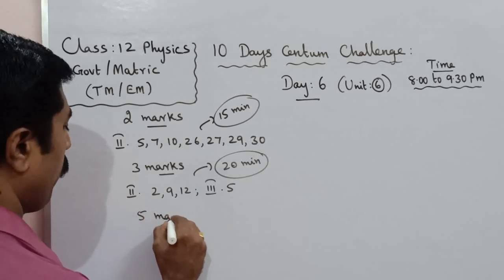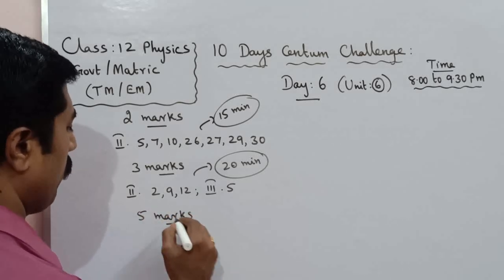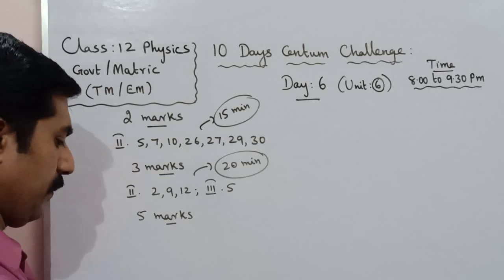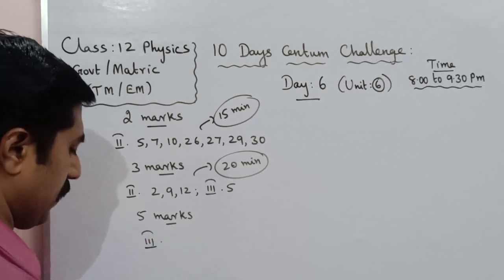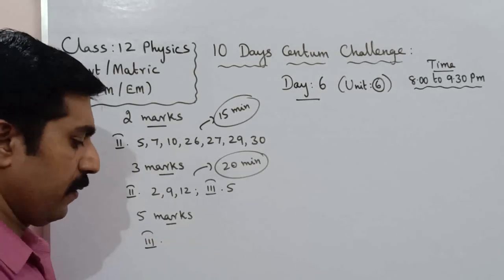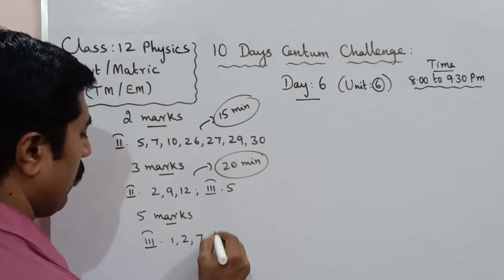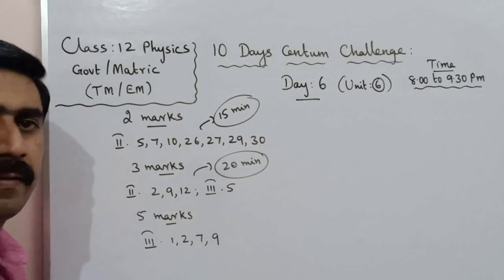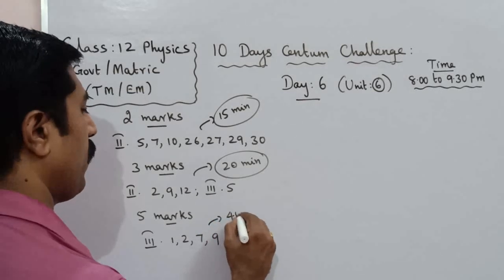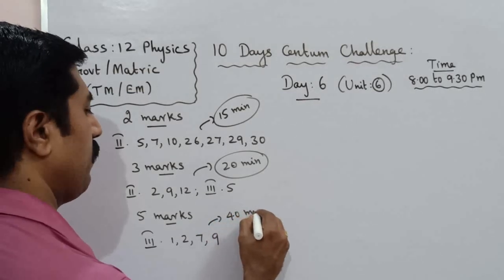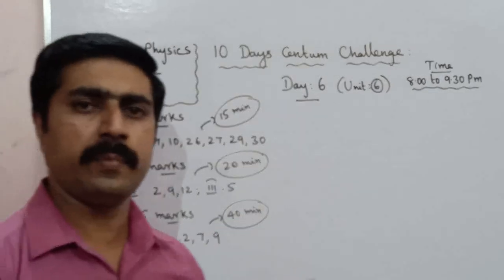Next, 5-mark questions — book exercise Roman numeral 3, question numbers 1, 2, 7, and 9. This section is allocated 40 minutes time.